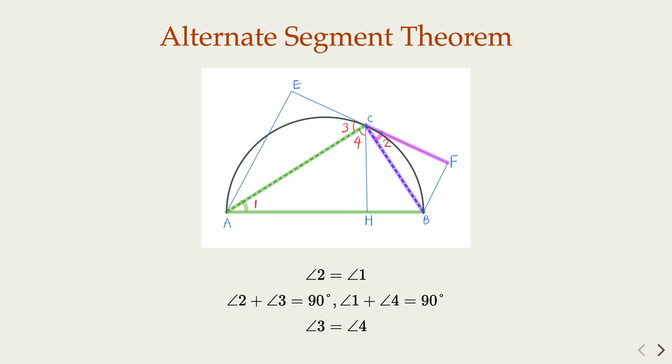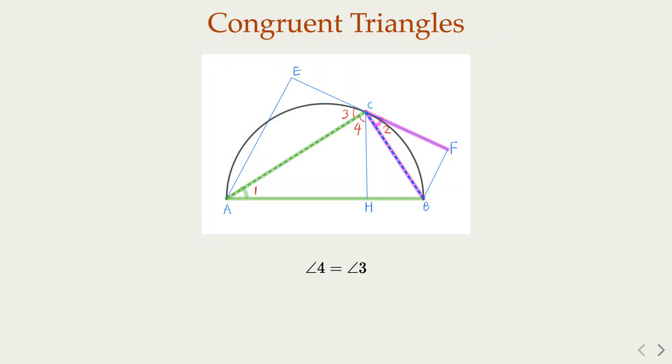Okay, so with that, we claim that we have congruent triangles. Can you spot that? Okay, angle 3 and 4. Let's go. AC is the common side of the two triangles. 3 equal to 4 and the two right triangles.